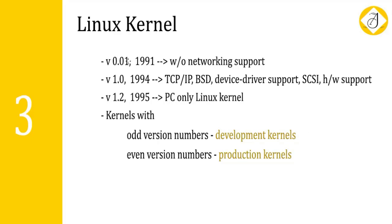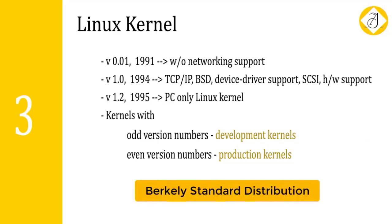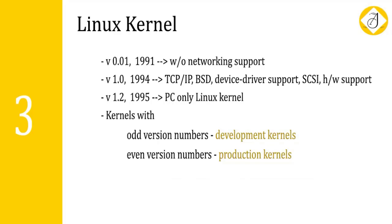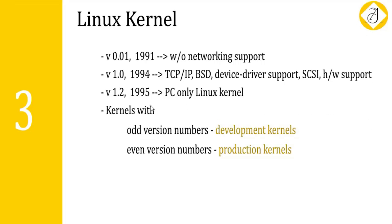The next version is version 1.0, developed in the year 1994, which came with basic TCP/IP networking protocol support and BSD — Berkeley Standard Distribution — which is a research team for open source. It also had extended support for device drivers, SCSI, and some hardware support. Version 1.2 was released in the year 1995 and was exclusively a PC-only Linux kernel.